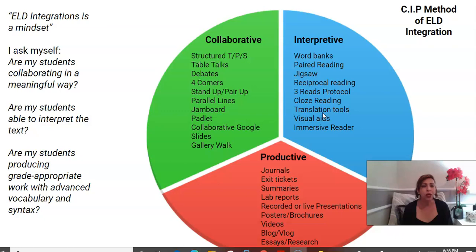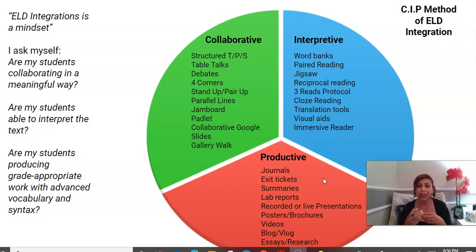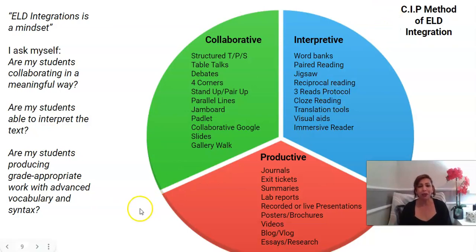The last question is: what are my students going to produce? Are they producing grade-appropriate work? Will they use high-level, course-specific vocabulary and more complex syntax to express themselves? Here are different products they can create: yes, journals and labs, but also a brochure, a commercial, a mini speech, or participation in a Socratic seminar. Productive output might be written or verbal.